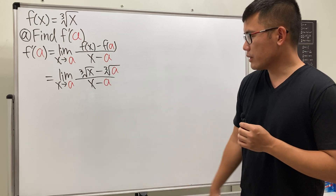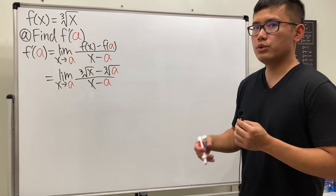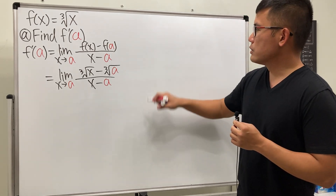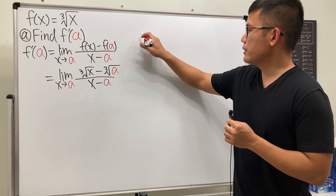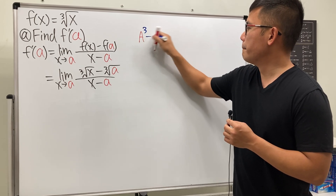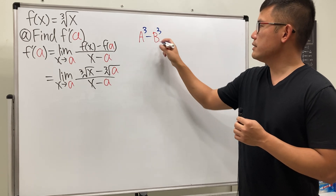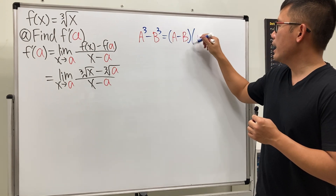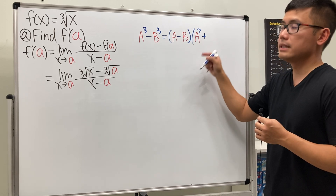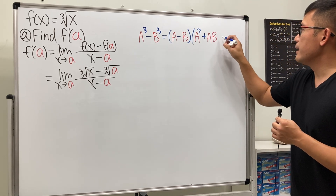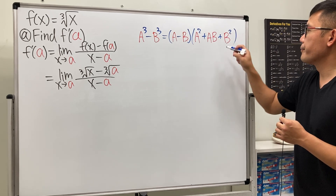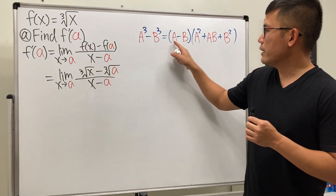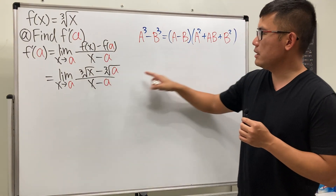The way we handle this is by using the difference of two cubes to help us factor — the cube root conjugate. The difference of two cubes identity is: a³ minus b³ equals a minus b, times a squared plus ab plus b squared. We are using this because we have cube root of x minus cube root of a, where a is cube root of x and b is cube root of a.